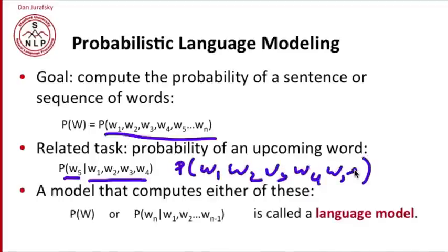A model that computes either of these things, either P(W), the joint probability of the whole string, or the conditional probability of the last word given the previous words, either of those we call a language model.